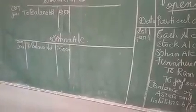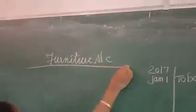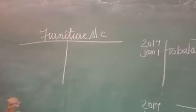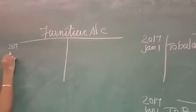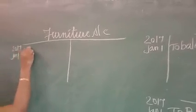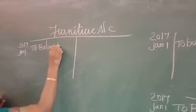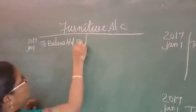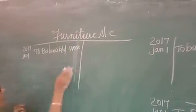Then come to furniture account. Furniture account — I have already told you the ledger is in a T-format. So what is the date? 2017, January 1. To balance brought down. What is the amount? The amount is 50,000.